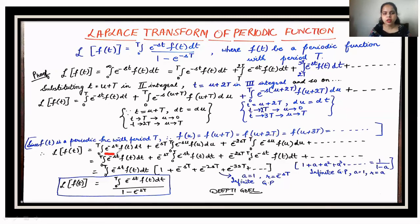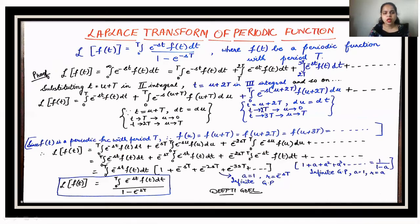After substitution, the first integral stays the same. In the second integral, since e^(-sT) has no u variable, it is taken outside the integral, leaving the integral of e^(-su) f(u) du from 0 to T. In the third integral, e^(-2sT) is taken outside similarly. Since u is just a dummy variable, we can replace u with t in all terms.